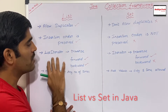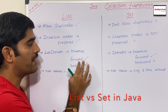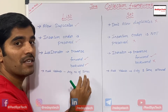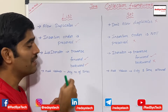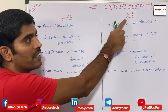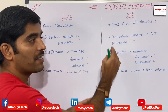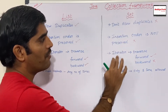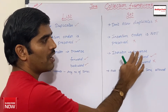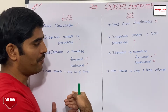You can use ListIterator with a List to traverse both forward and backward between elements. But in terms of Set, you don't have ListIterator or a Set iterator — you have a basic Iterator. You can use it to traverse only forward; there is no way to traverse backward.